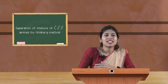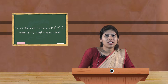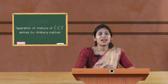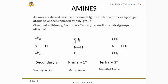Before starting with this method, let us see what amines are and what is the difference between primary, secondary, and tertiary amines. Amines are the derivatives of ammonia, which has the formula NH3. In NH3, one or more hydrogen atoms have been replaced by alkyl groups, and they are classified as primary, secondary, or tertiary depending upon the number of replacements.